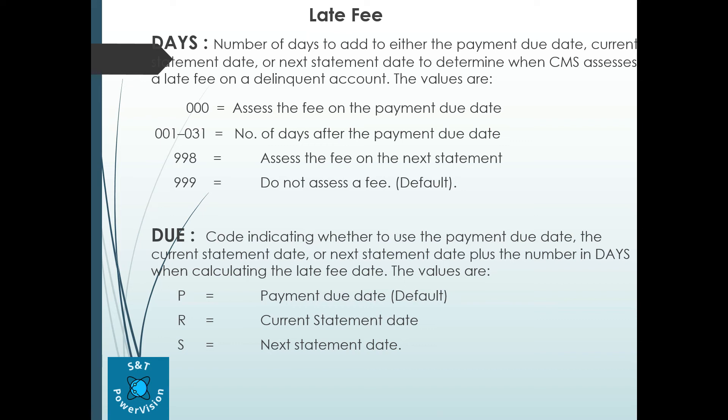The first important parameter is the Days field. It indicates the number of days to add to either the payment due date, current statement date, or next statement date, to determine when CMS assesses the late fee on a delinquent account. The value 000 means assess the fee on the payment due date only — if the parameter is 000, on the payment due date only the late fee will be calculated and posted.